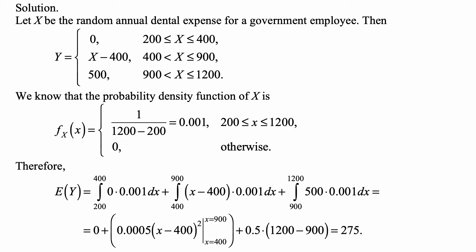It's equal to zero if the expense X is between 200 and 400, because that's covered by the primary policy. Once the expense exceeds 400, the supplemental policy pays up to 500 of additional amount, the amount over 400.